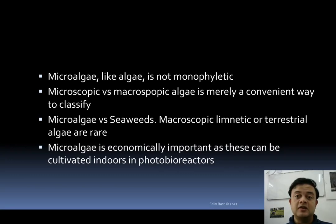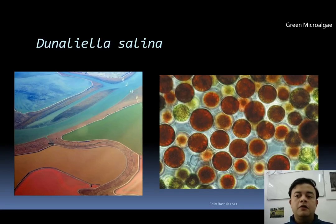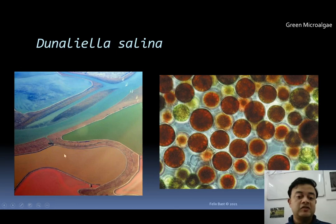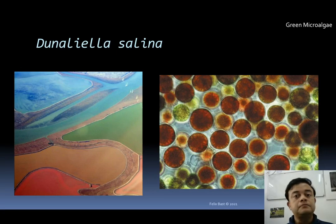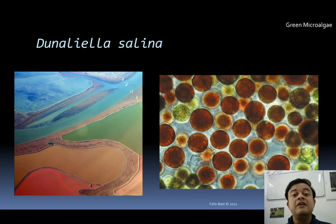Microalgae are used for high-value products like nutraceuticals and pharmaceuticals. One example of a green microalgae is Dunaliella salina — an extreme halophytic microalgae that can sustain even salt marshes. The picture shown is a massive-scale salt marsh in San Francisco, where you can see the cultivation fields have completely changed to a reddish color. This is because Dunaliella salina contains the pigment beta carotene, and it is being cultivated here for the commercial production of beta carotene.